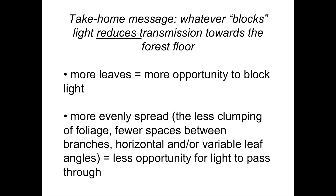The take-home message related to the Beer-Lambert extinction law and forest structure is that whatever blocks light reduces transmittance toward the forest floor. More leaves means more opportunity to block light. And if those leaves are more evenly spread — less clumping, fewer spaces between branches, with horizontal or more variable leaf angle orientations — there is less opportunity for light to pass through.